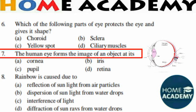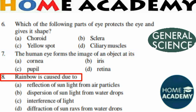Question number 8: Rainbow is caused due to what? Rainbow is a spectrum of white light from the sun. It is a phenomenon due to the combined effect of dispersion, reflection, and refraction of sunlight by spherical water droplets. The correct option is dispersion of sunlight from water drops. There are two types of rainbows: primary and secondary.